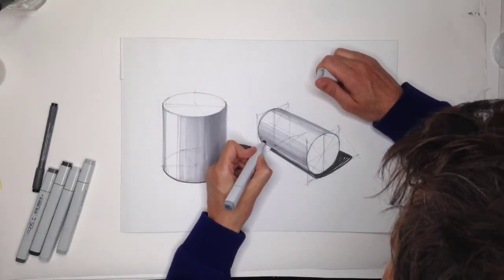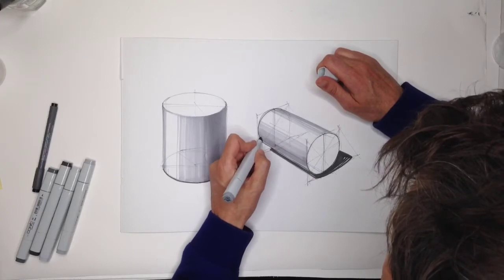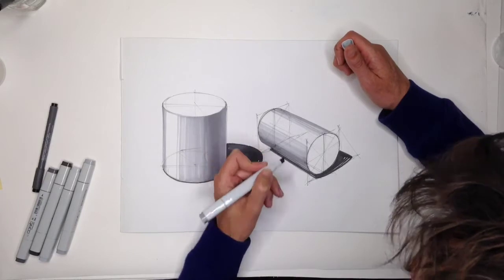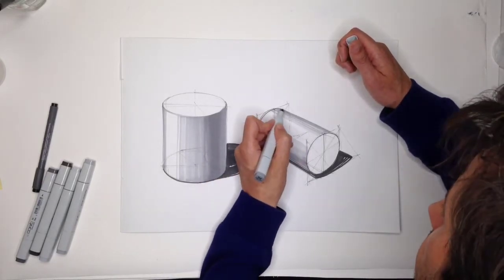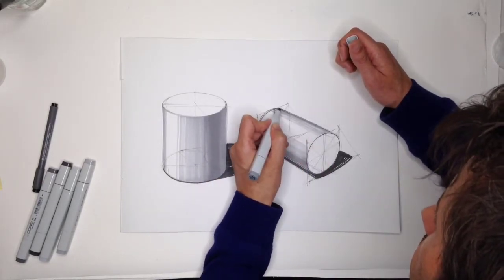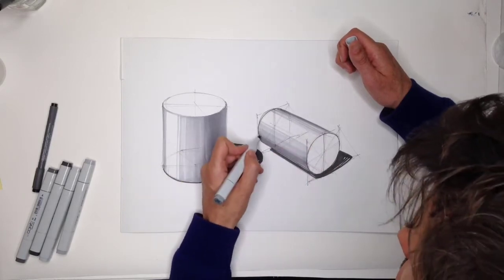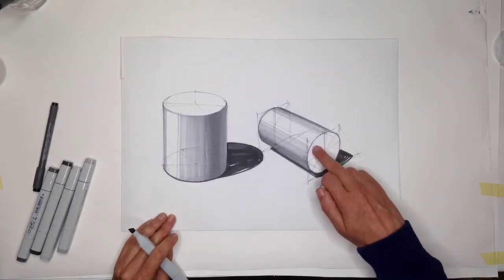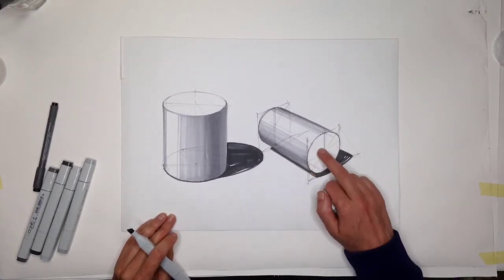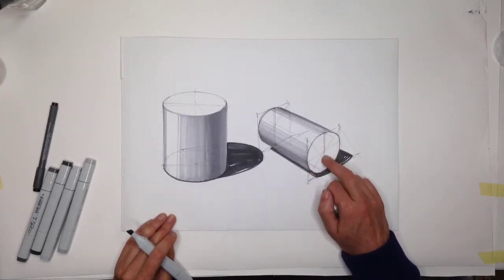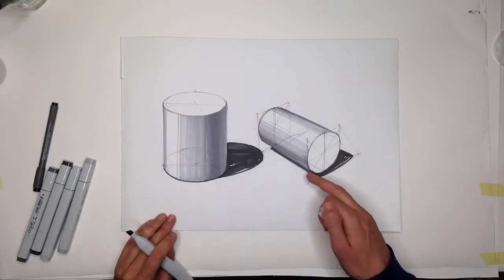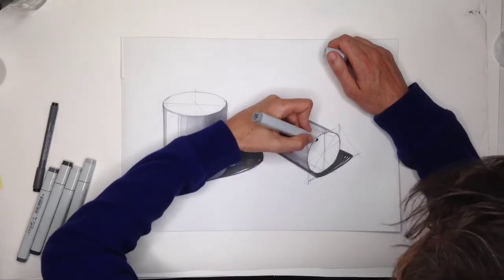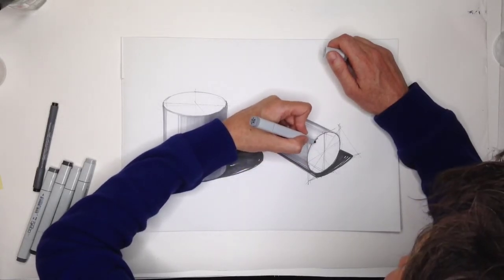So we'll darken this a bit more, and as you can see it's getting form. So I call it form shadows, shadow on the form. Okay, and now consider the vertical surfaces. This vertical surface is in the shadow side, so that should be shaded just like you would shade the shadow side of a cube shape.